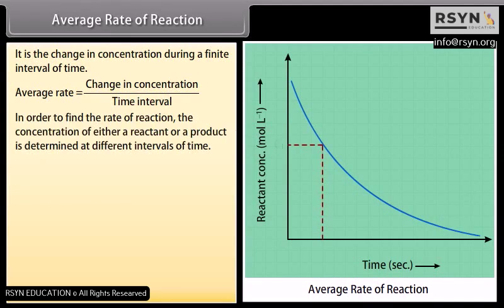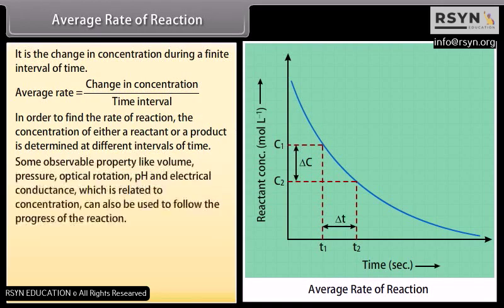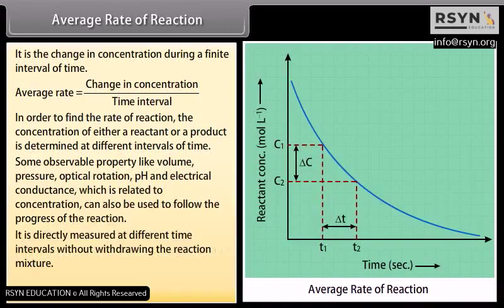In order to find the rate of reaction, the concentration of either a reactant or a product is determined at different intervals of time. Some observable properties like volume, pressure, optical rotation, pH and electrical conductance, which are related to concentration, can also be used to follow the progress of the reaction. It is directly measured at different time intervals without withdrawing the reaction mixture. Average rate is equal to negative ΔC upon ΔT.